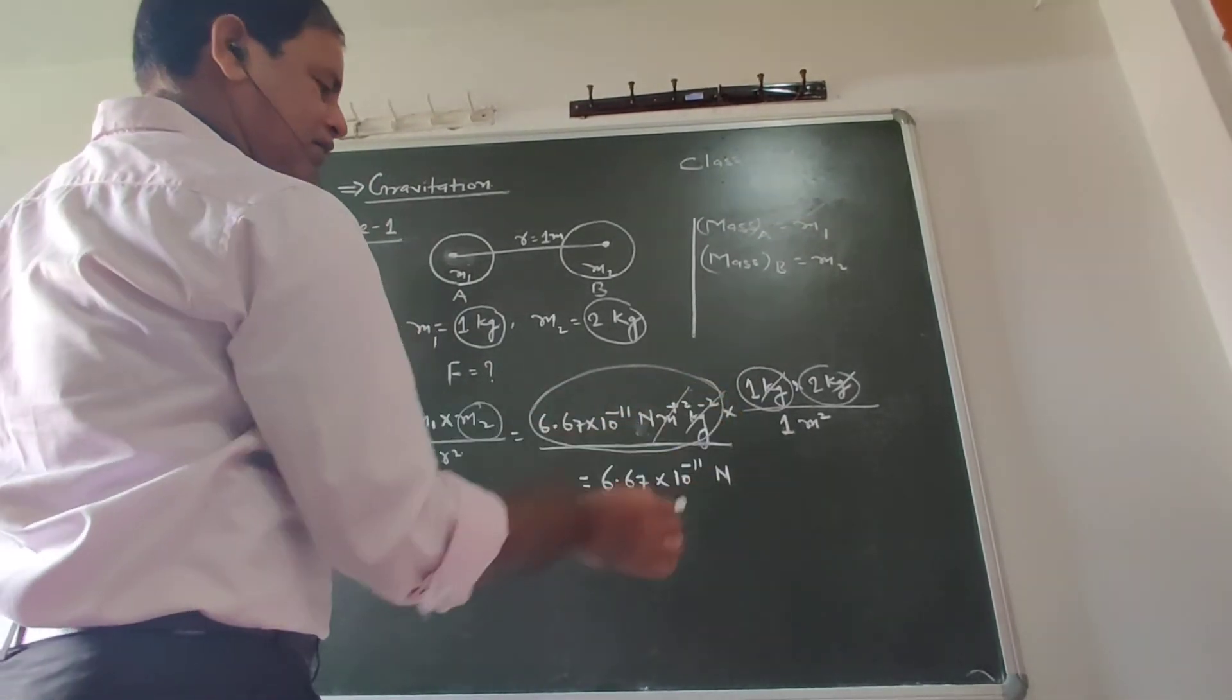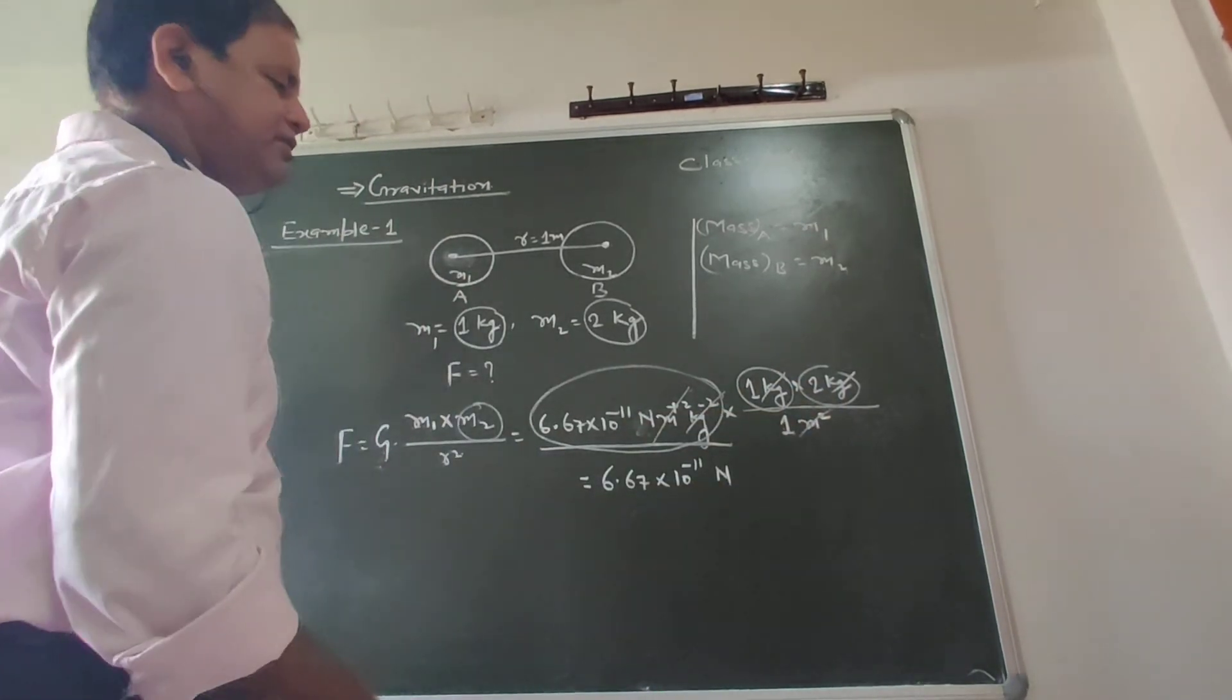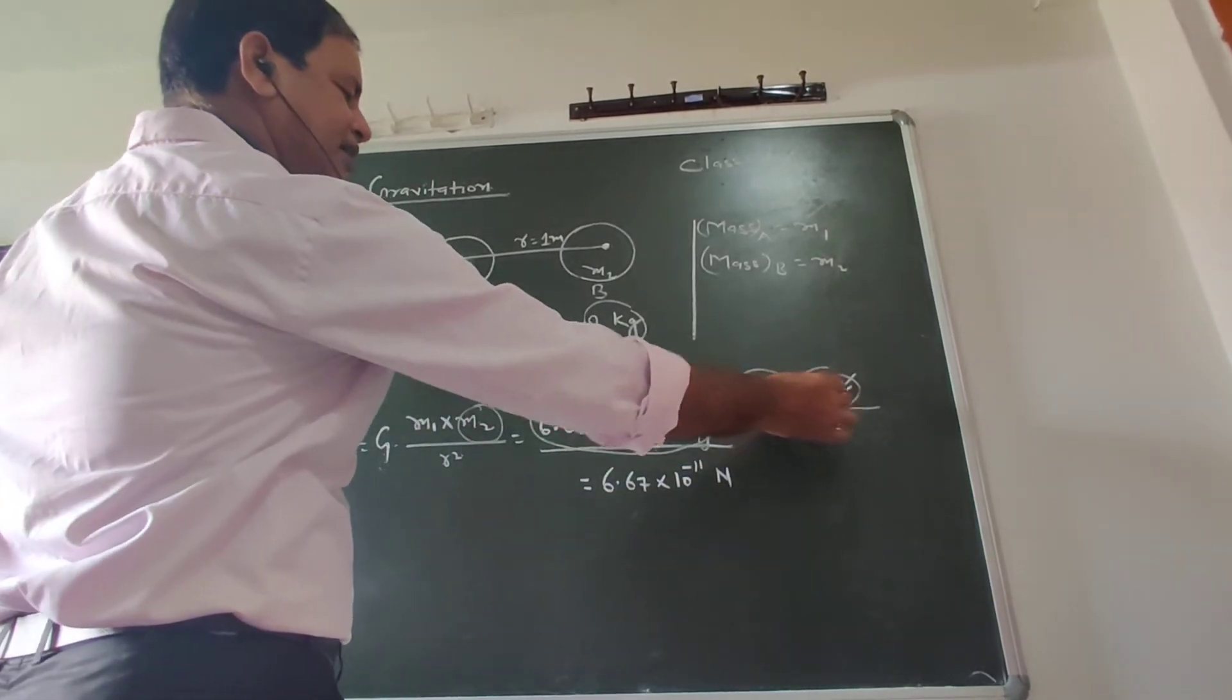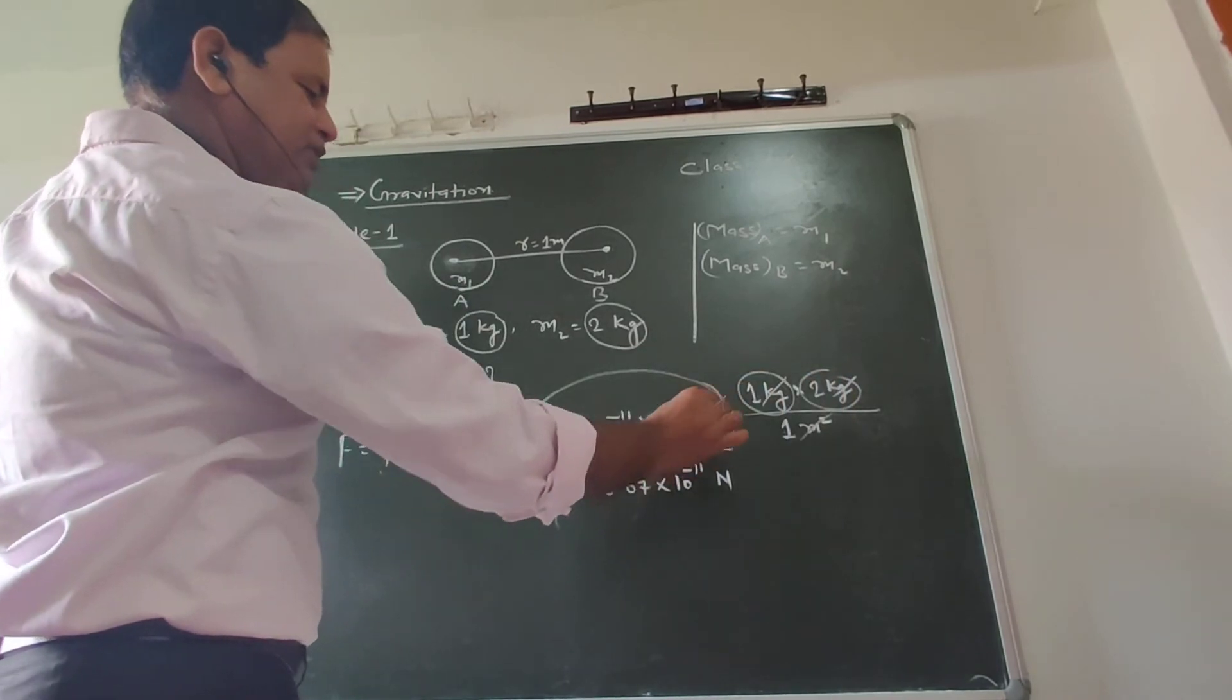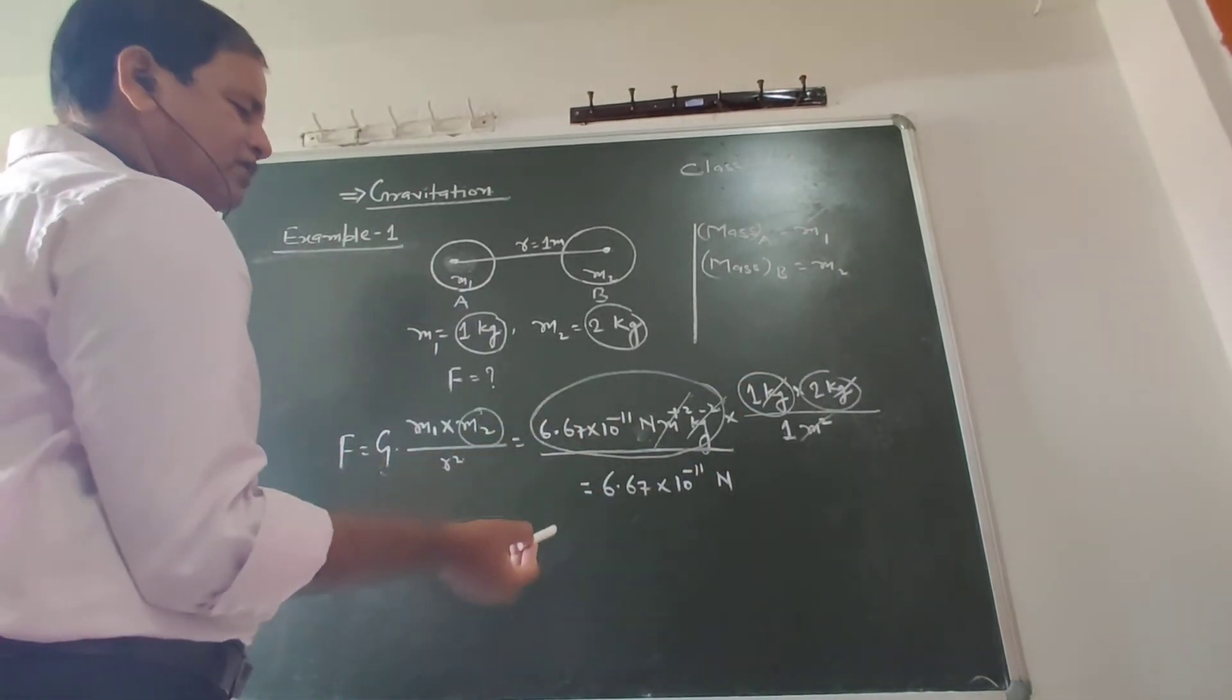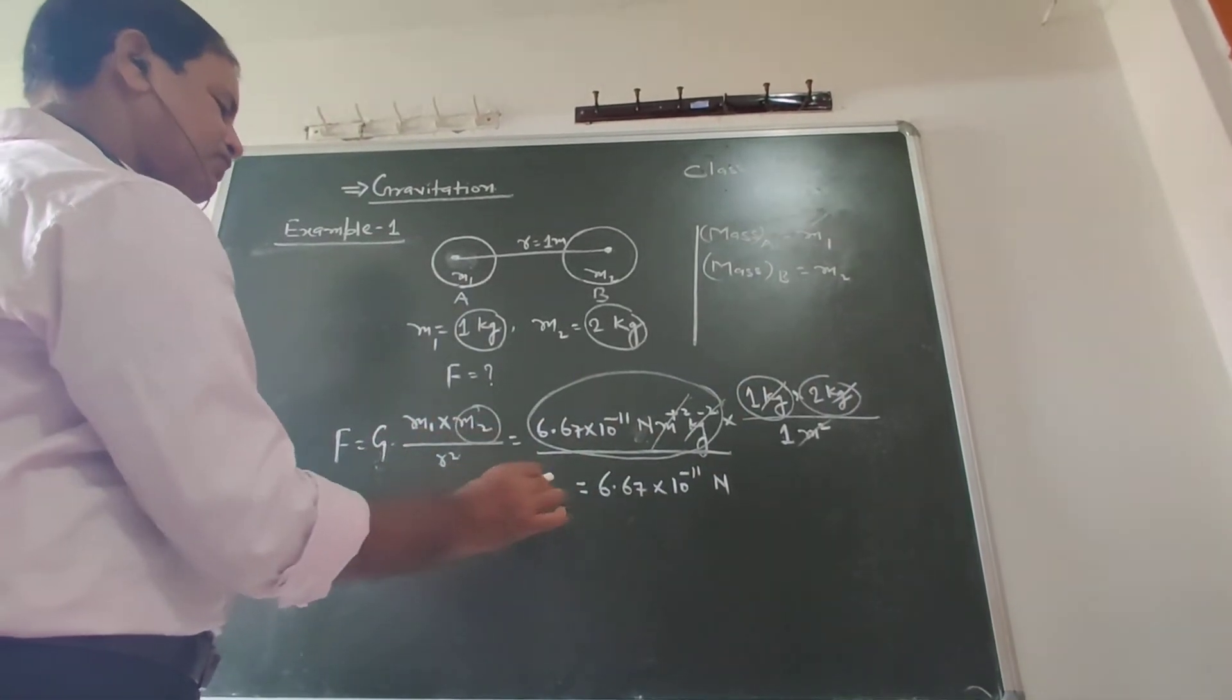This is meter squared, meter squared cancels. And kg times kg is kg power plus 2, kg power minus 2 cancels. So this is the force of attraction.